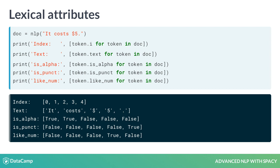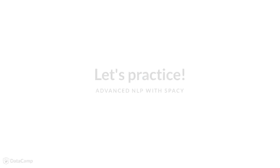For example, a token 10 — one zero — or the word ten, T-E-N. These attributes are also called lexical attributes. They refer to the entry in the vocabulary and don't depend on the token's context. Let's see this in action and process your first text.